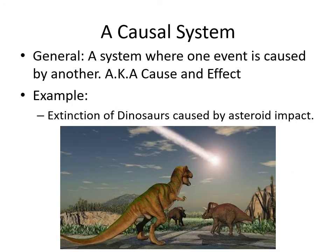So what's a causal system? A causal system is a system where one event is caused by another — cause and effect. For example, the extinction of the dinosaurs was caused by an asteroid impact. There might be smaller causalities in there: the impact hit the Earth, created a fireball, created a nuclear winter, and it's that nuclear winter that really killed the dinosaurs. So the overall causality is: the asteroid impact killed the dinosaurs.